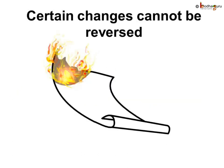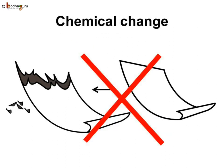But what will happen if we burn a piece of paper and it changes into ash? Is it possible to turn this ash into paper again? No, it is impossible. There are some changes which are permanent and cannot be reversed. Such a change which cannot be reversed is called a chemical change.